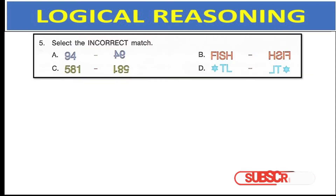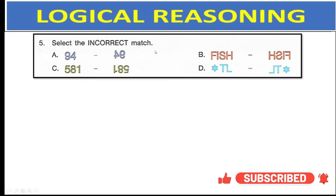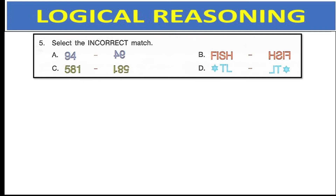Select the incorrect match. Options A, B, and D are all vertical reflections — they are simply getting inverted vertically. However, option C is first a horizontal reflection and then reflected vertically. That is how you get this figure. Hence, option C is the incorrect match.